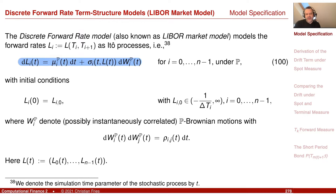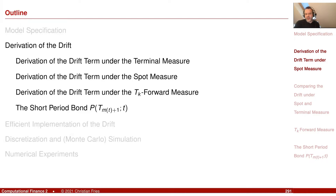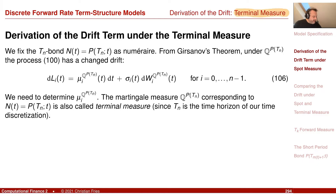To derive the drift, we have the choice of numéraire. We already derived the drift under the terminal measure. The terminal measure is the equivalent martingale measure corresponding to the terminal bond — the zero-coupon bond associated with the end of our time discretization, which pays one unit at T_n.